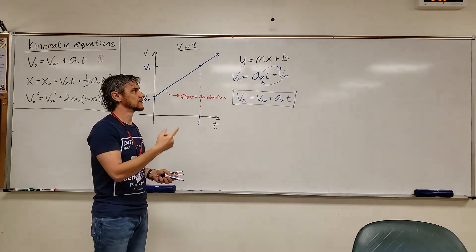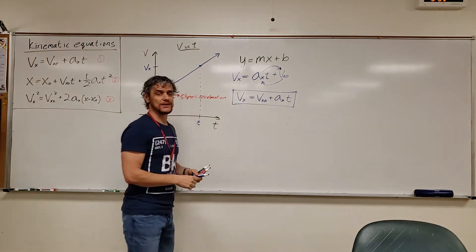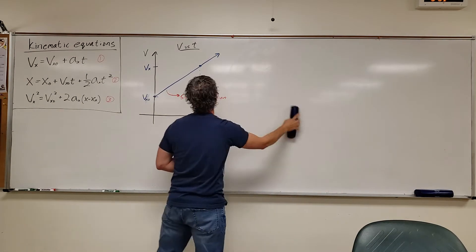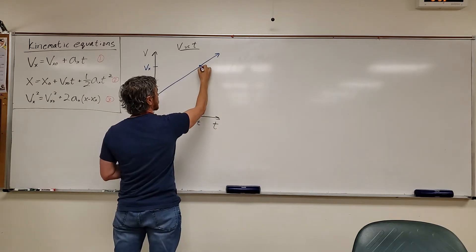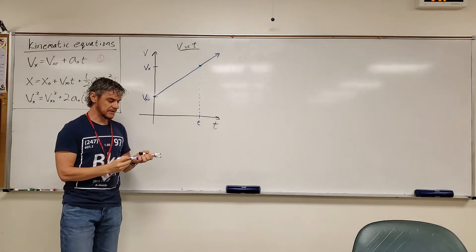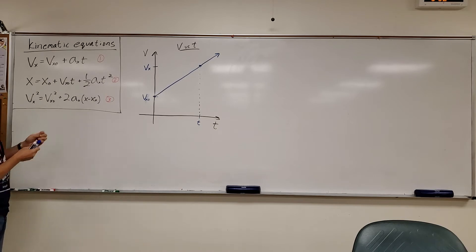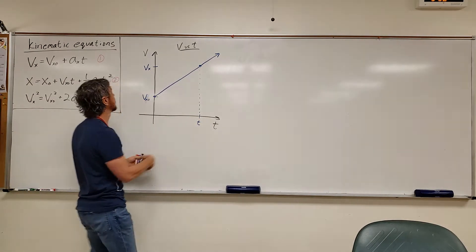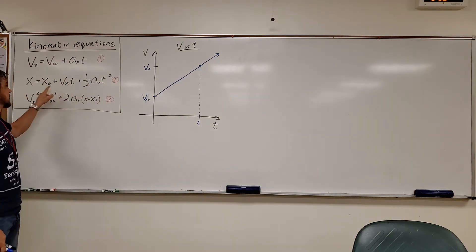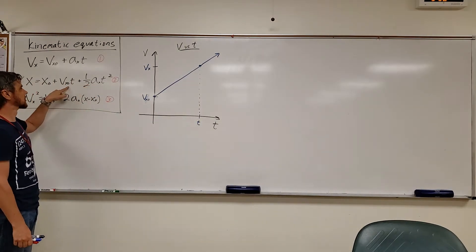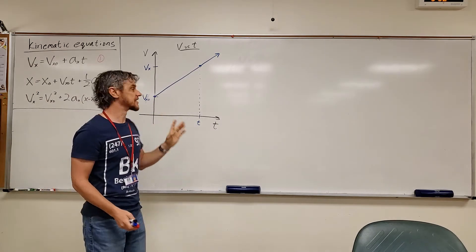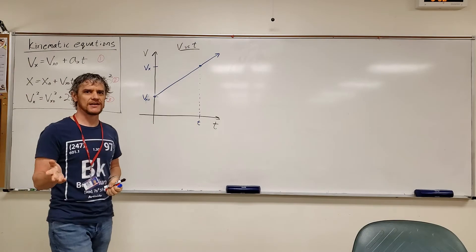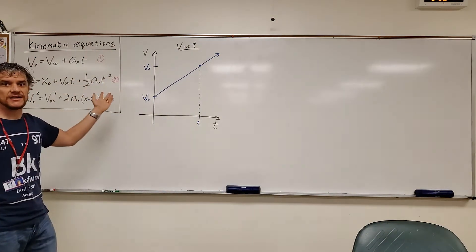Now let's move to kinematic equation number two, still using the velocity versus time graph. This one looks scary — it's a quadratic, with a T-squared term, a T term, and a constant, like Y equals AX-squared plus BX plus C. Notice it plots position, not velocity. Under uniformly accelerated motion, position versus time is a parabola, because the equation itself is quadratic.